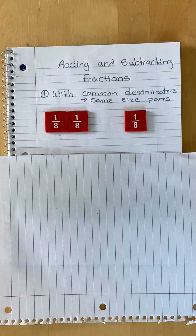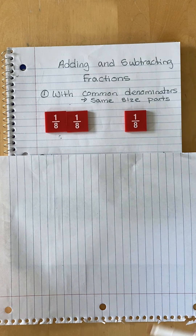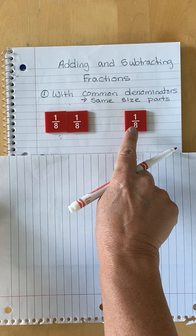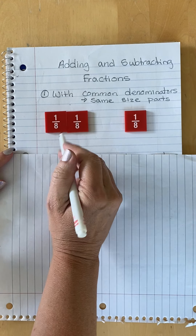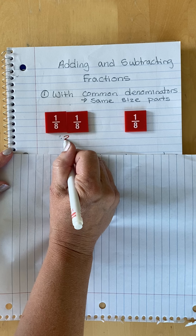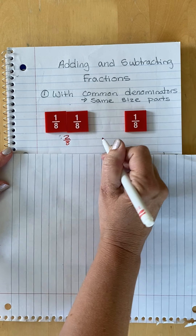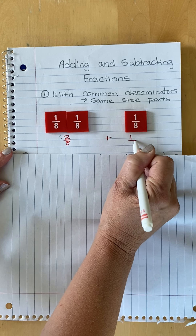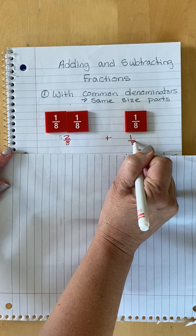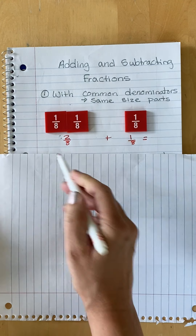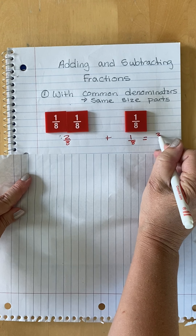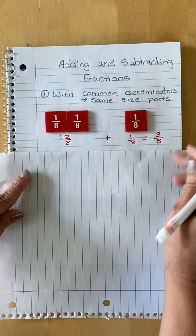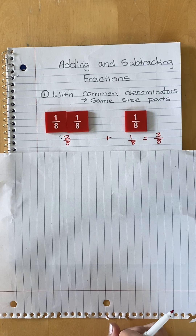This should be a review skill from fourth grade. When you have the same size parts — let's say we were going to add — we have two-eighths plus one-eighth. We just have to count the number of parts. Together, we have three-eighths because they are all the same size.